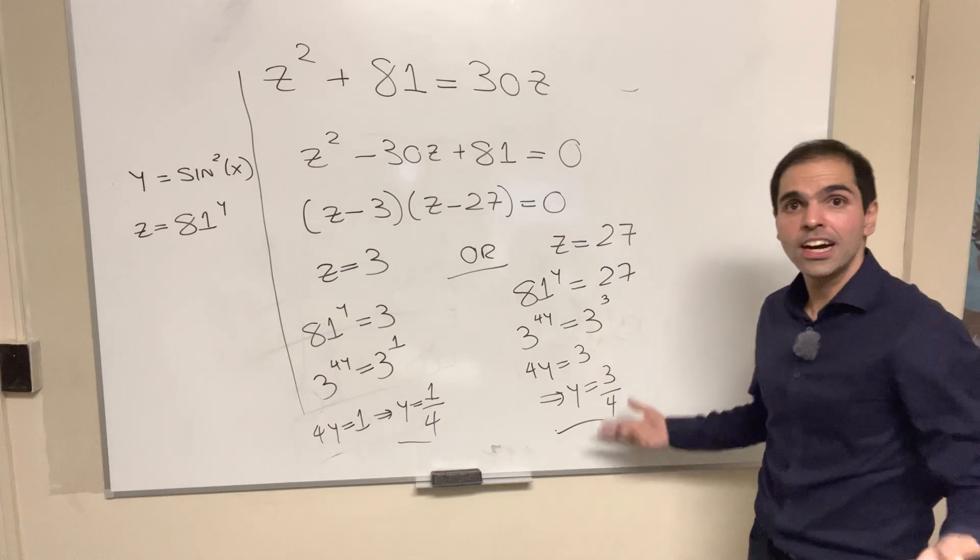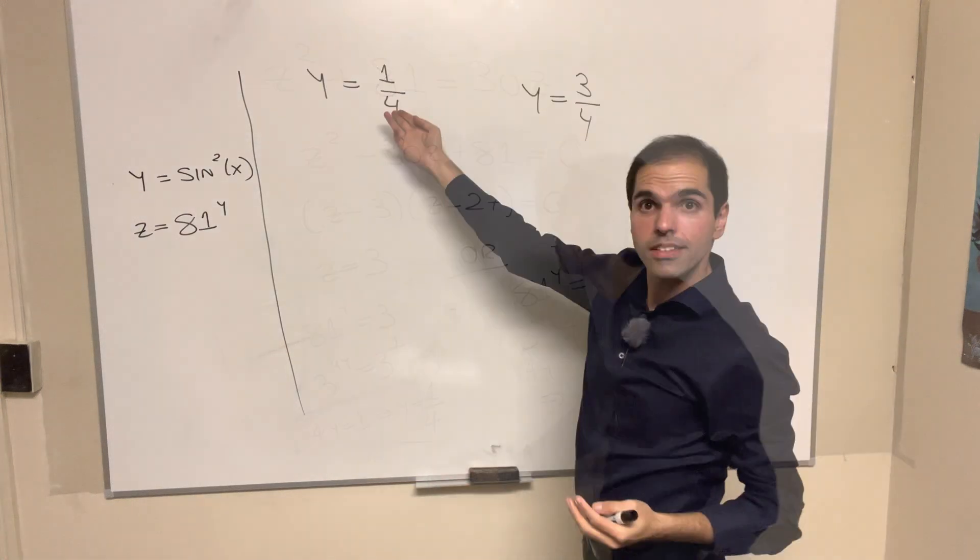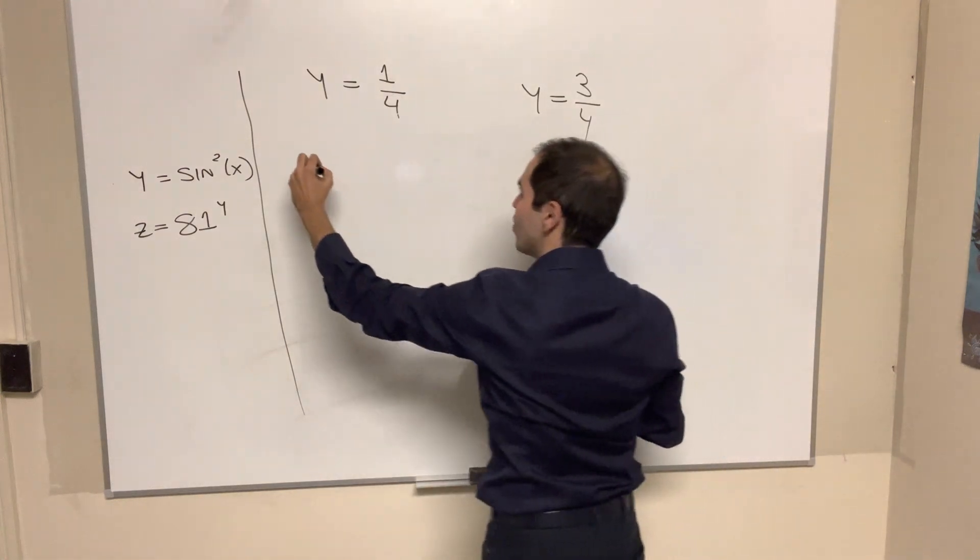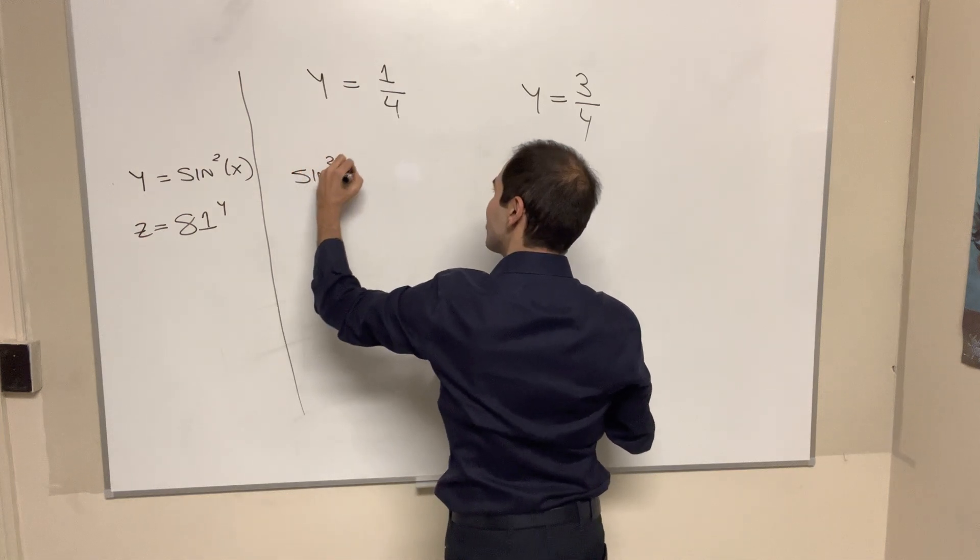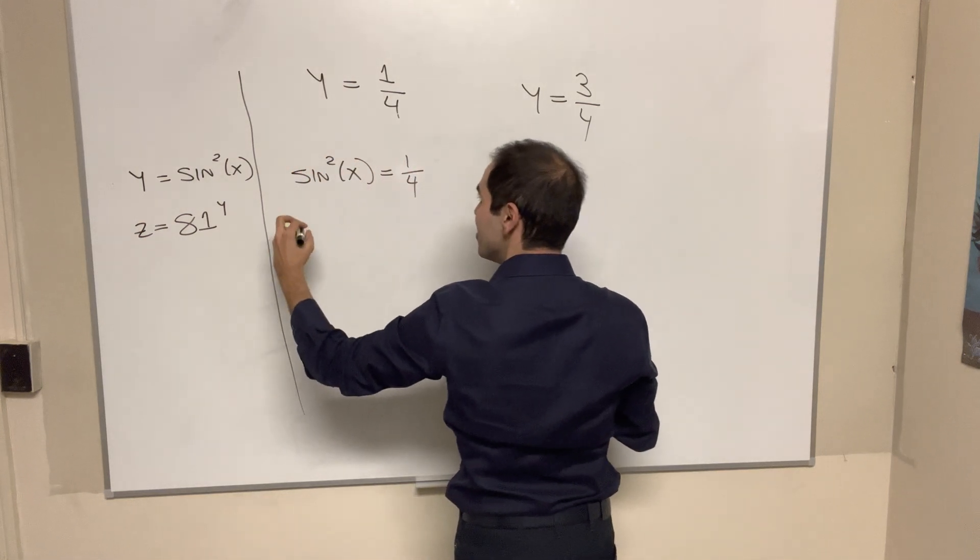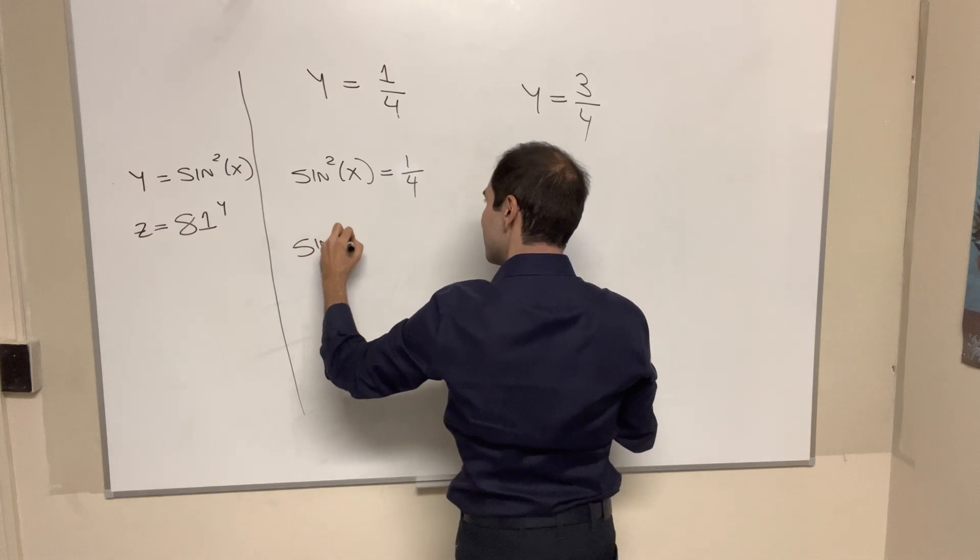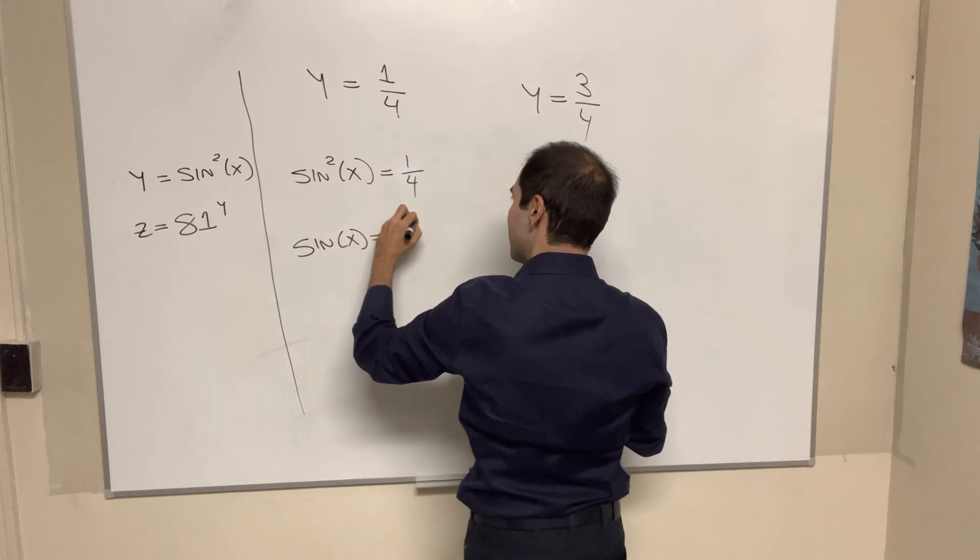So now we solve for y, and now we just need to solve for x. So in the case of y equals 1 4th, we have sine squared x equals 1 4th. So sine of x is plus minus 1 half.